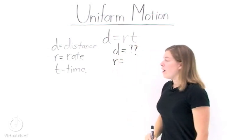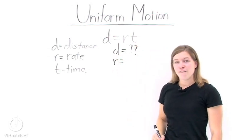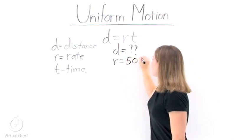How about rate? Well, our plane is flying at 500 miles per hour. So our rate is 500.